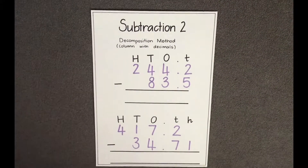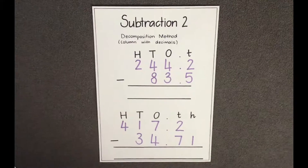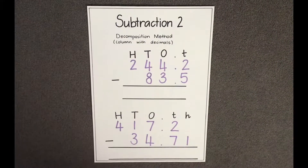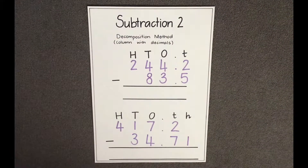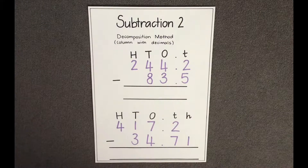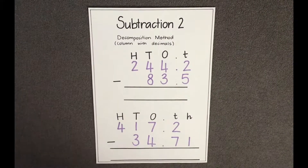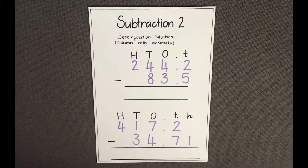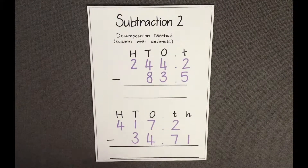I'm going to teach you how to use the decomposition method, or the compact column strategy, which involves decimals. Now that we are working with decimals, it is important that we have a secure knowledge of the place value system.